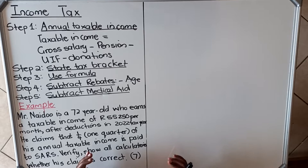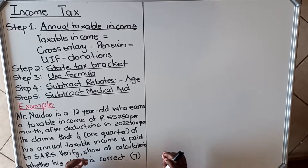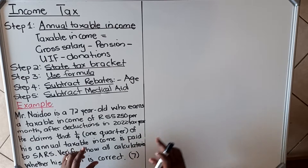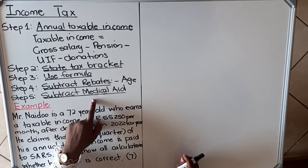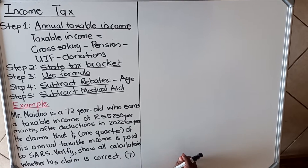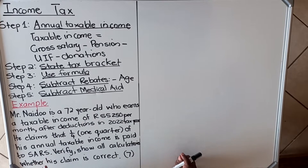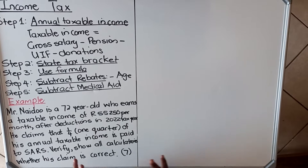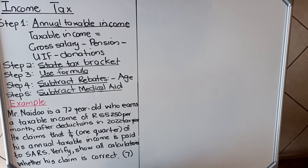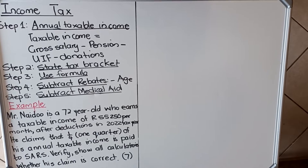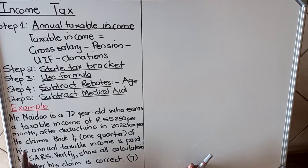The last step is to subtract medical aid. In this example they didn't include medical aid because they didn't ask for it. In your question paper they will tell you how much to subtract for the main member and how much for each additional member, so you need to read the question carefully before you start.